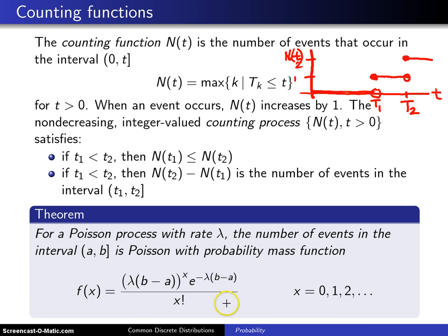Now, if you look at that for a while, it looks vaguely familiar to a Poisson distribution, and it is a Poisson distribution, but instead of just having the parameter lambda, it has the parameter lambda times (b minus a).